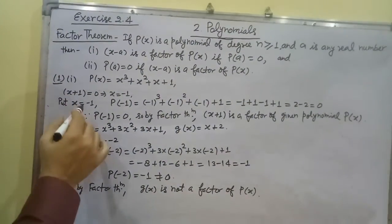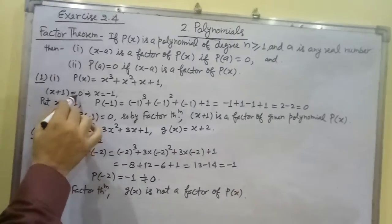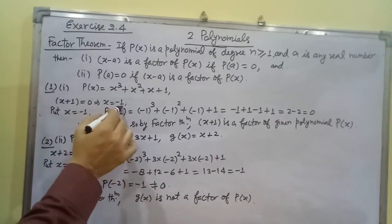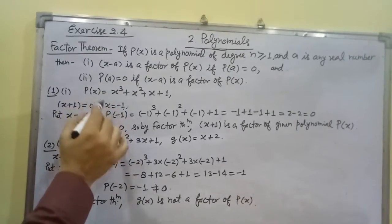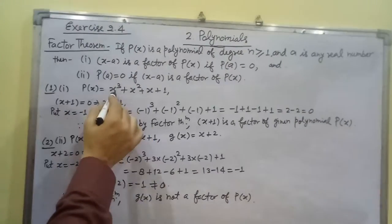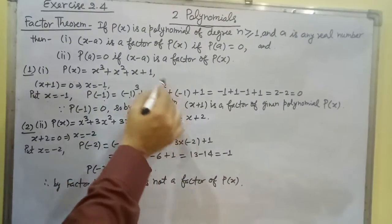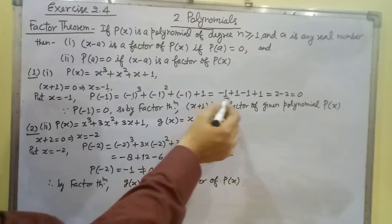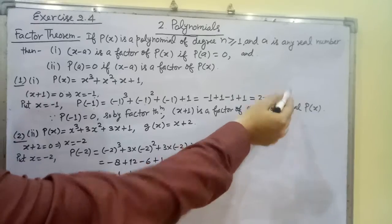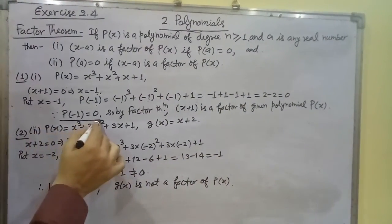Setting x plus 1 equal to 0 gives x equal to minus 1. We substitute x equal to minus 1 into P(x) to find P(-1). So P(-1) equals (-1)³ + (-1)² + (-1) + 1, which equals minus 1 plus 1 minus 1 plus 1, giving P(-1) equal to 0.